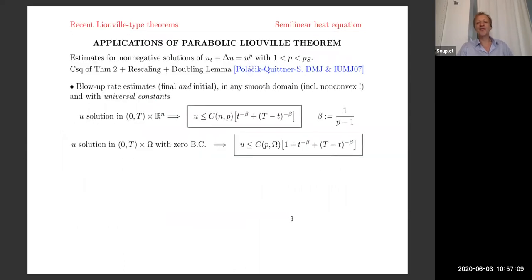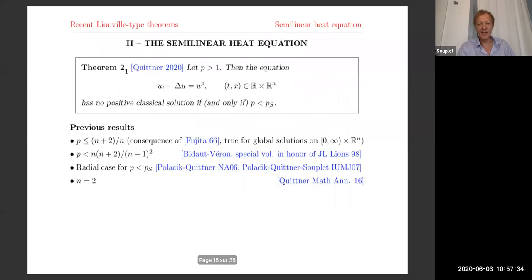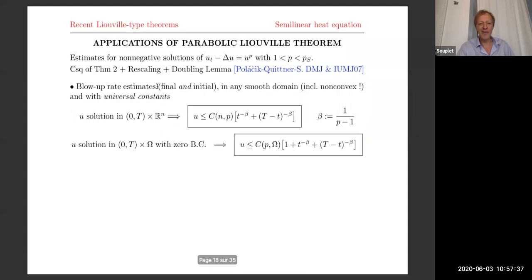The preprint is on the archive if you want to check everything. Now for applications: these came from our work with Peter and Pavel in a couple of papers from 2007, where we started to use the doubling lemma combined with the rescaling technique and the Liouville theorem. Now with the new Liouville theorem, you have almost every estimate you would like for non-negative solutions of this equation in the subcritical range. Any solution satisfies initial and final blow-up estimates in smooth domains or in the whole space. The novelty is that you can include non-convex domains, whereas the Giga-Kohn technique required convexity.